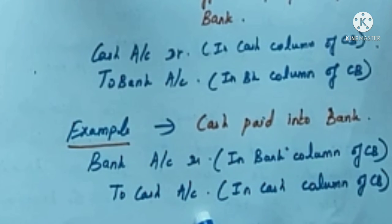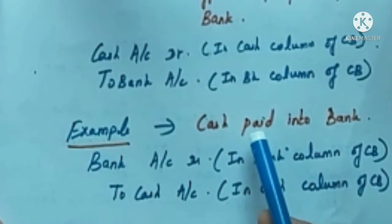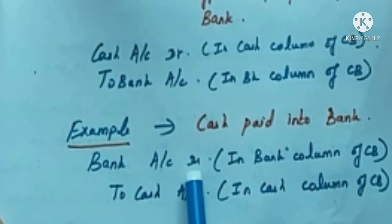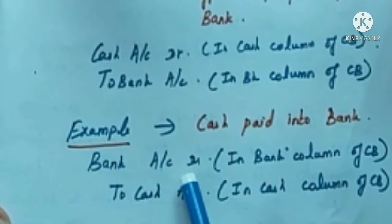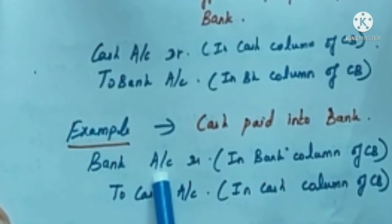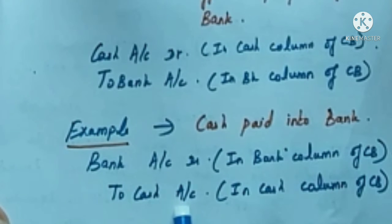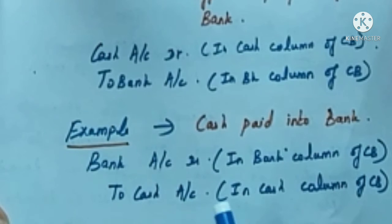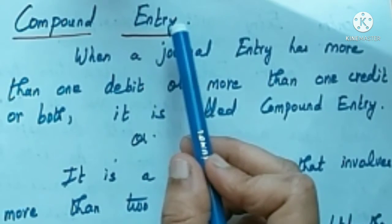On the credit side of the cash book there is also a discount column, cash column, and bank column. So both the debit side and credit side have three columns each. For the entry bank account debit to cash account, we record the debit aspect on the debit side of the cash book in the bank column, and the credit aspect — cash account — on the credit side in the cash column.